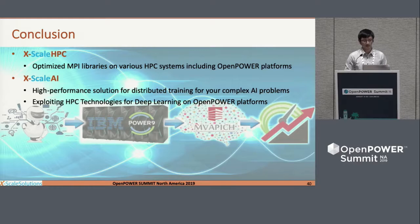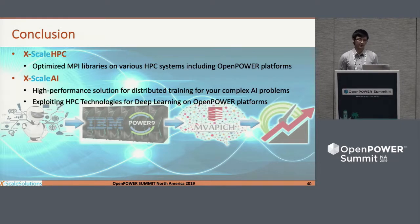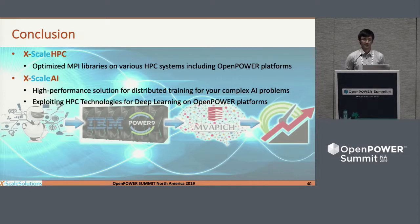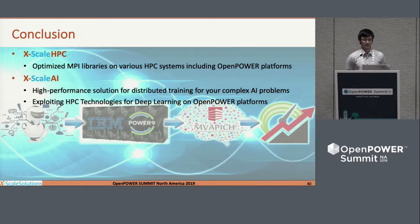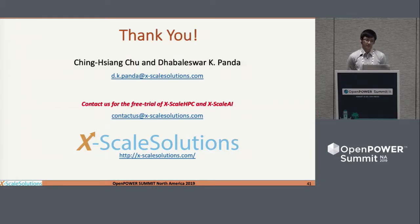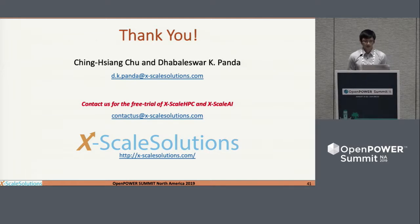To conclude: we introduced two products today. X-Scale HPC is an optimized MPI library on various HPC systems including Power systems — if you have any kind of traditional MPI application or scientific application, you can use this product to get very good, scalable performance on large-scale systems. X-Scale AI, similarly based on our HPC experience, provides a high-performance solution for distributed AI training, giving you fine-tuned performance out of the box on OpenPower platforms. If you're interested, feel free to contact us — I'm happy to talk offline. You can send us an email and start with a free trial. Thank you.